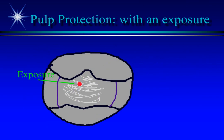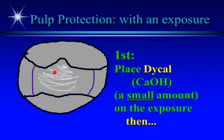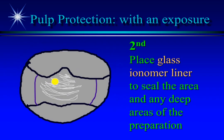For direct pulp capping: a red dot simulates a pinpoint exposure of the pulp. Dical, chemical-cured, is placed on the exposure — you only need a small dot because Dical is soluble and lacks strength. Glass ionomer, dual-cured, is then placed to cover the Dical and any other deep areas of the preparation. Deep excavation is when there is less than half a millimeter of dentin between the floor of the prep and the pulp. To avoid a pulp exposure when nearing the pulp, one option is to stop excavating, place a medicated temporary filling, and wait 6 to 8 weeks before completing the restoration.